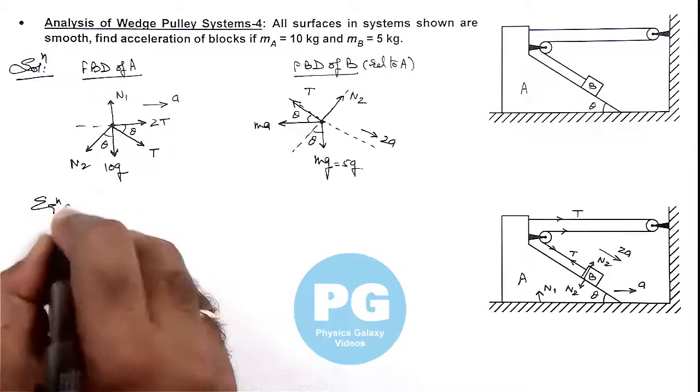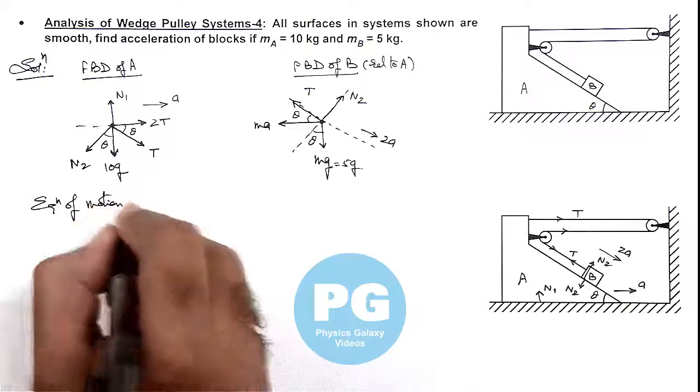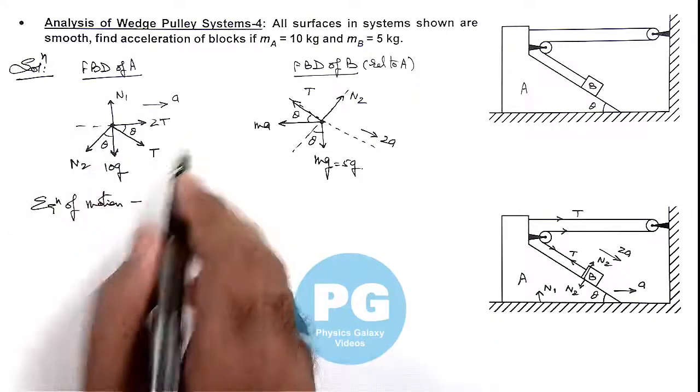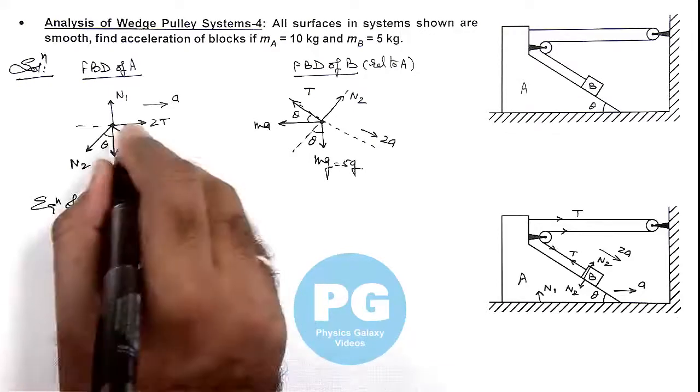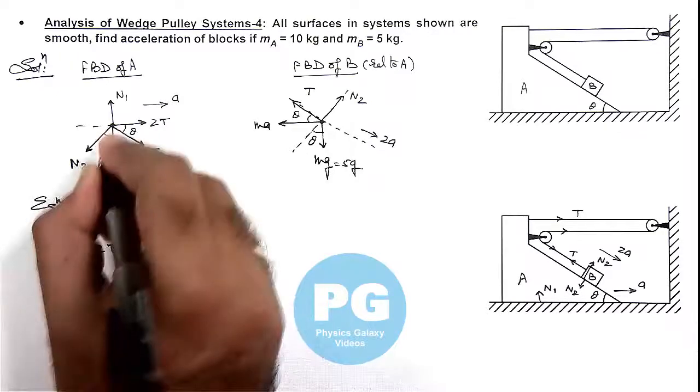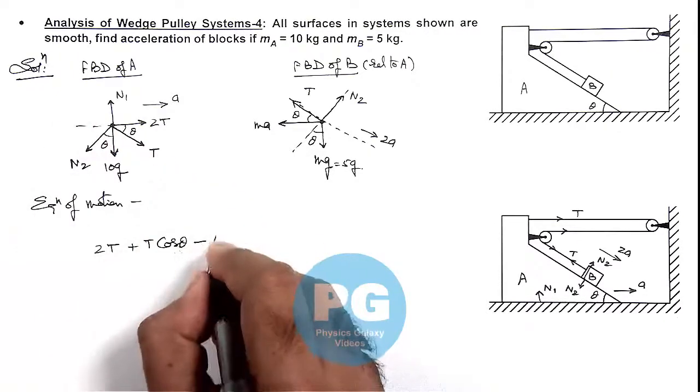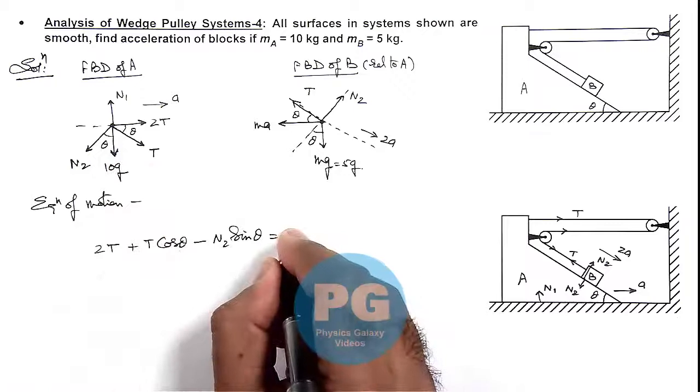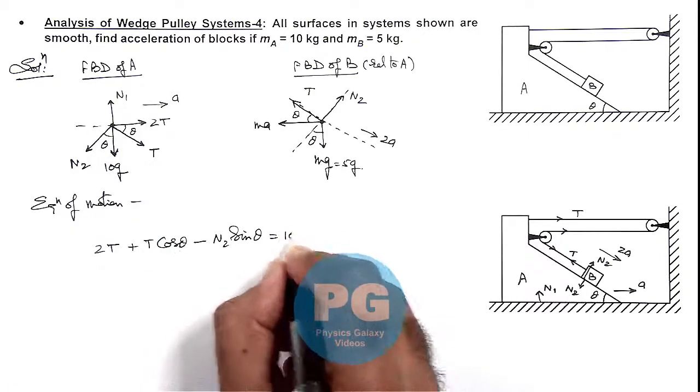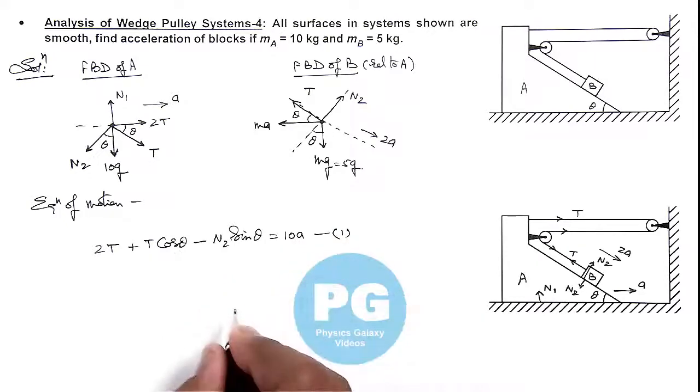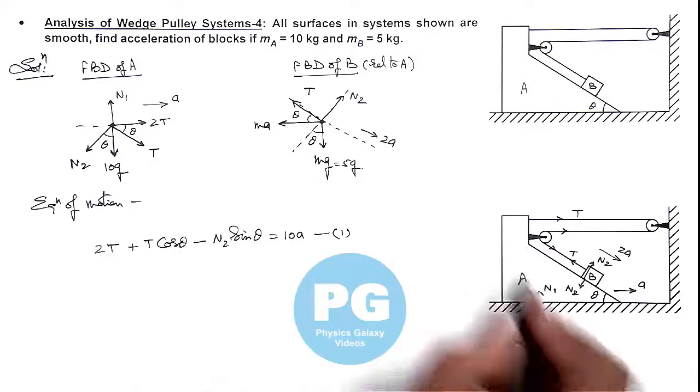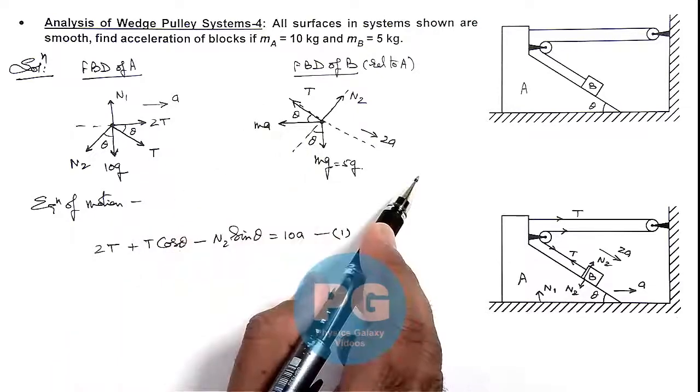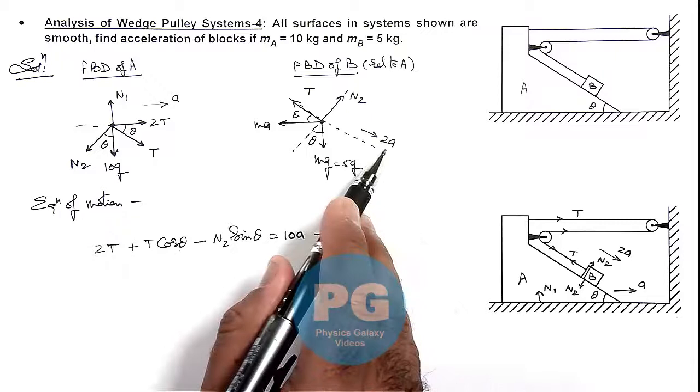Now if we write the equations of motion for motion of these two blocks, then for block A, here we can write as it is moving toward right, we can write its motion equation as 2T plus T cos theta minus the component of normal reaction which is N2 sin theta acting on it, is equal to its mass and acceleration. So its mass is 10 kg, so here we can write it 10aA. That is equation 1.